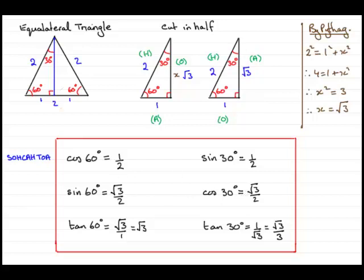I hope you've got some idea of how we can calculate these exact values. In another tutorial, I'll show you how to use these to work out trig ratios for other common multiples of these angles — like the cosine of 120 degrees — using the quadrant rule.